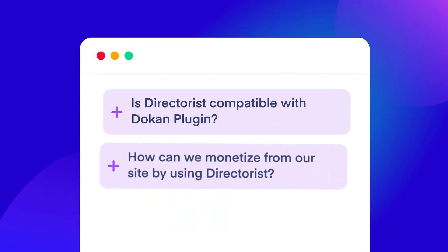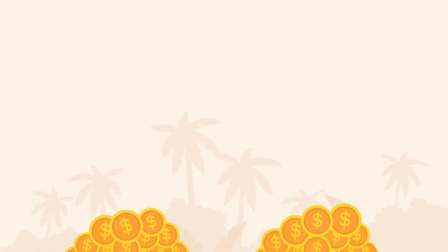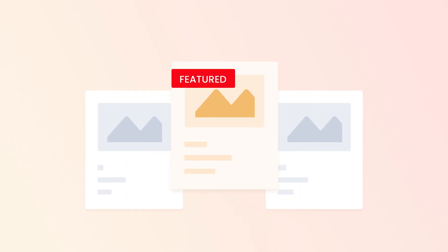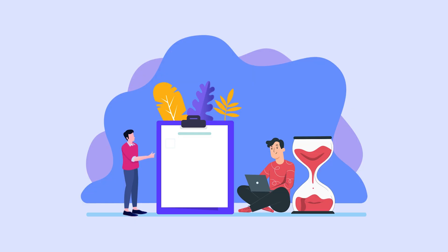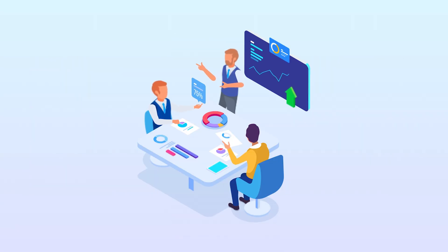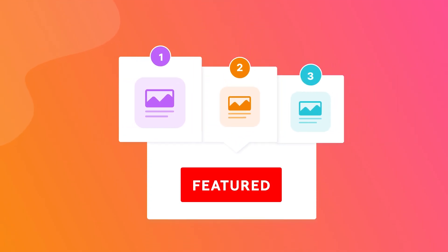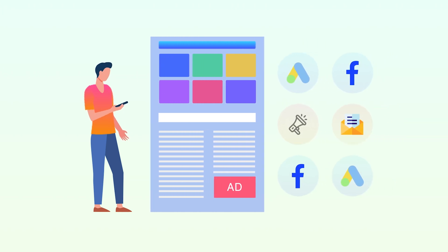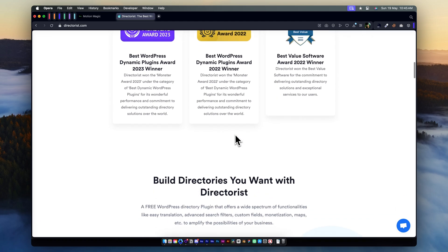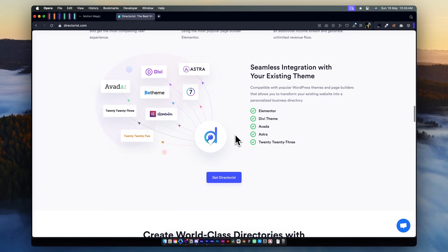How can we monetize from our site? Directorist provides various ways to generate revenue from your website. You can earn money by charging for listings, featured listings, premium listings, claiming listings, viewing private listings, allowing private or sponsored advertising, charging for membership, selling business leads, promoting affiliate products, allowing sponsored articles or guest posting, accepting bookings and appointments, ranked featured listings, and paid placement. With Directorist's extensive monetization features, you can effectively monetize your website's traffic and engagement while offering enhanced user value.